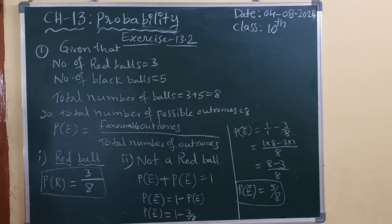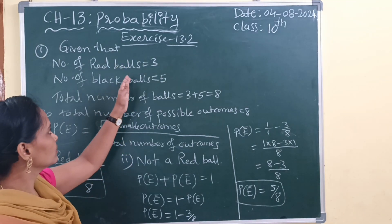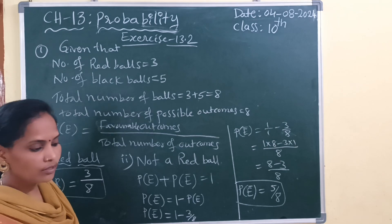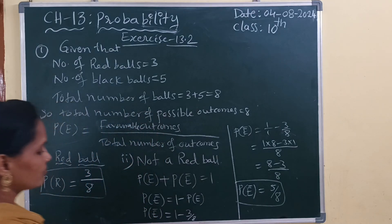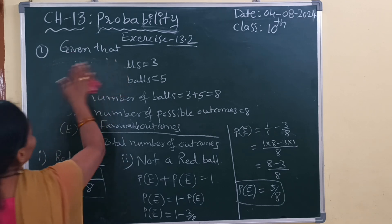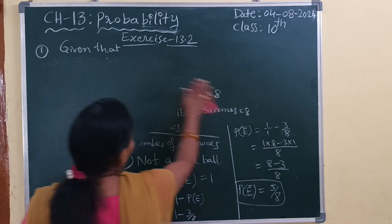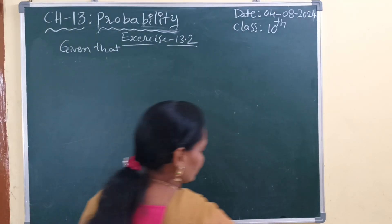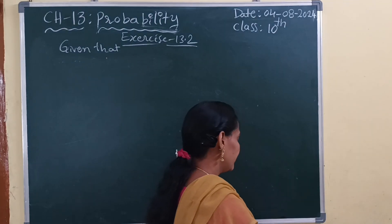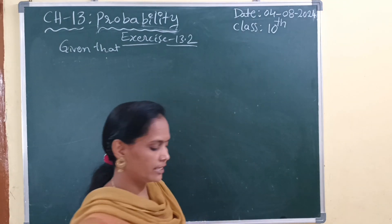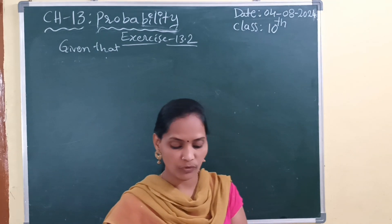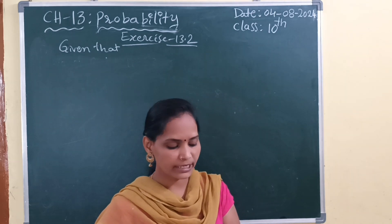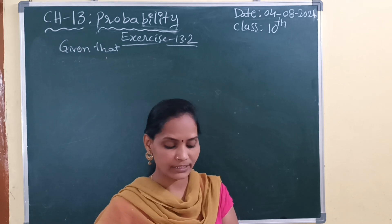Okay, let's take the screenshot. Very simple — just what are the given conditions in the question, and according to those we can solve the problem. Next, second question I am going to explain. A box contains 5 red marbles, 8 white marbles, and 4 green marbles. One marble is taken out of the box at random. What is the probability that the marble taken out will be — first: red, next: white, next: not green.